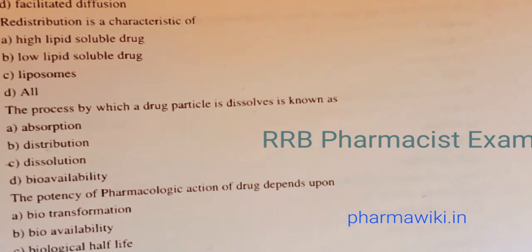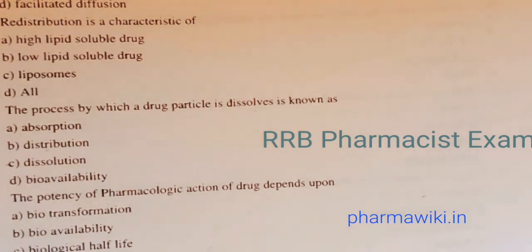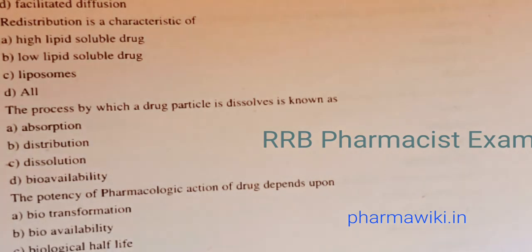Question 19: The potency of pharmacological action of a drug depends on — biotransformation, bioavailability, biological half-life, or concentration of a drug at receptors. The answer is D. The potency of pharmacological action depends on the concentration of a drug at the receptors.